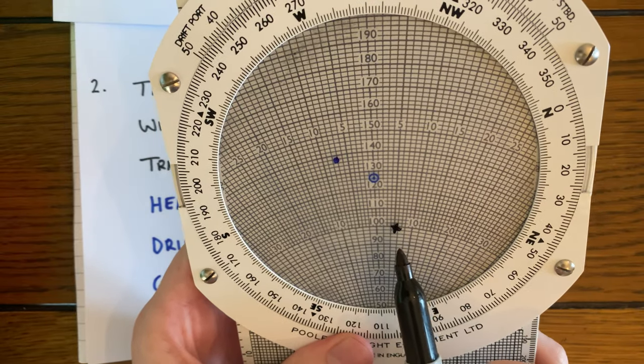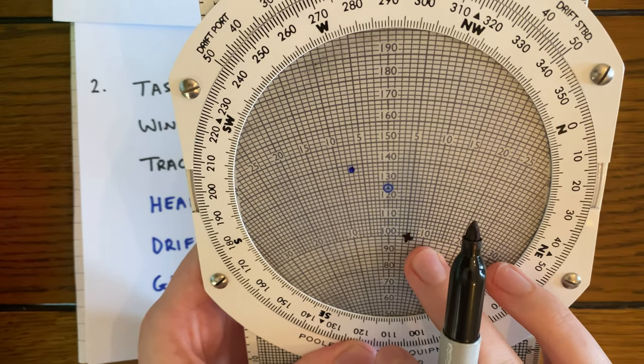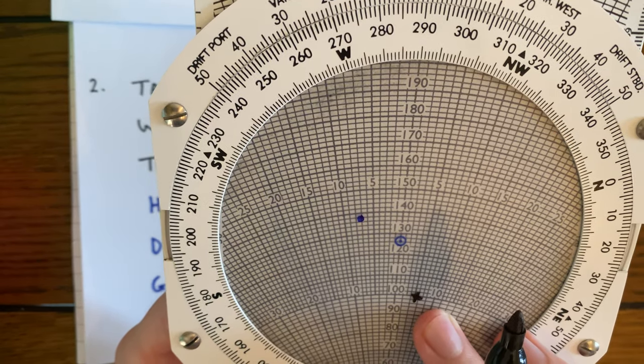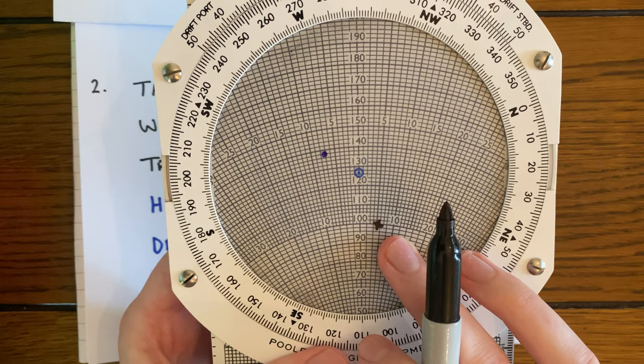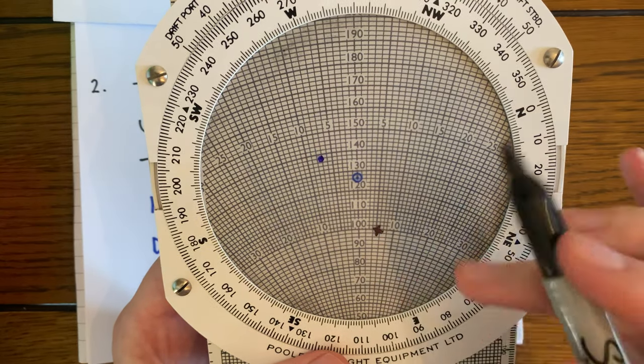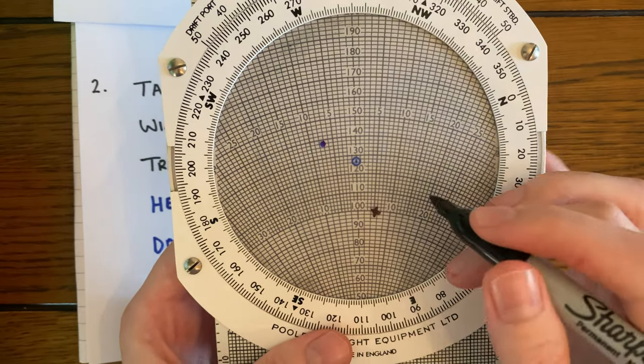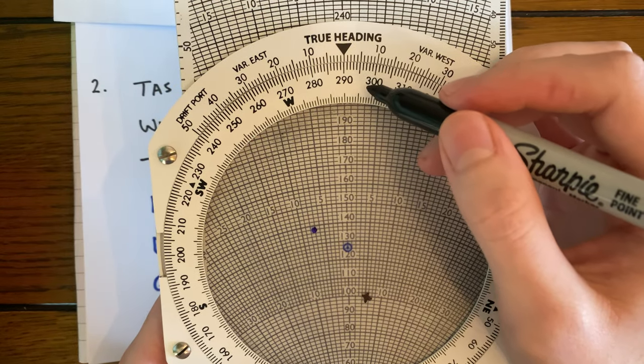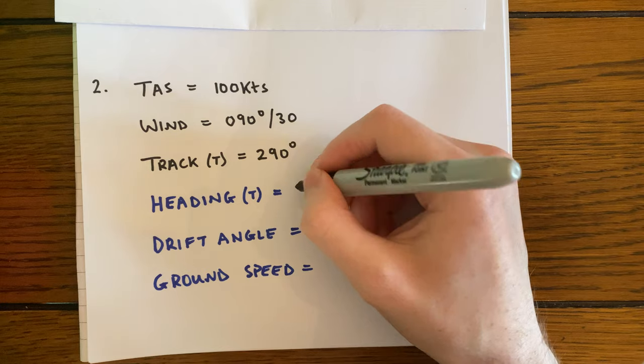And we can read this now off. We can read our heading from this. So that is about five—it's between five and six degrees to the right. It's probably ever so slightly more to the six-degree line. It's just I've drawn quite a big X. So we'll say six degrees to the right. So 290 plus six—our heading is now going to be 296 degrees.